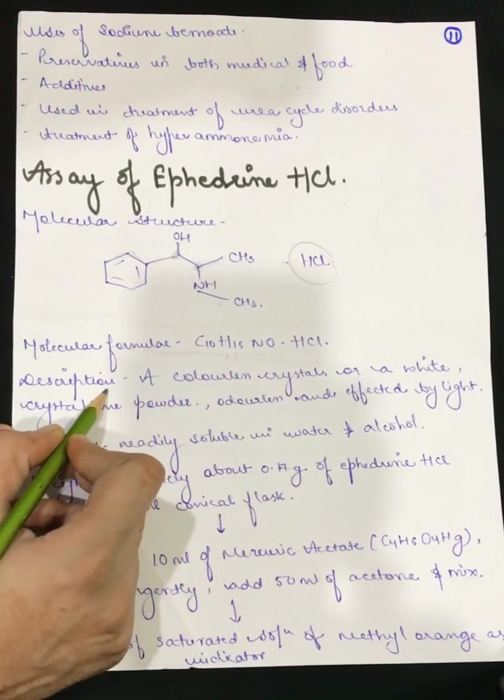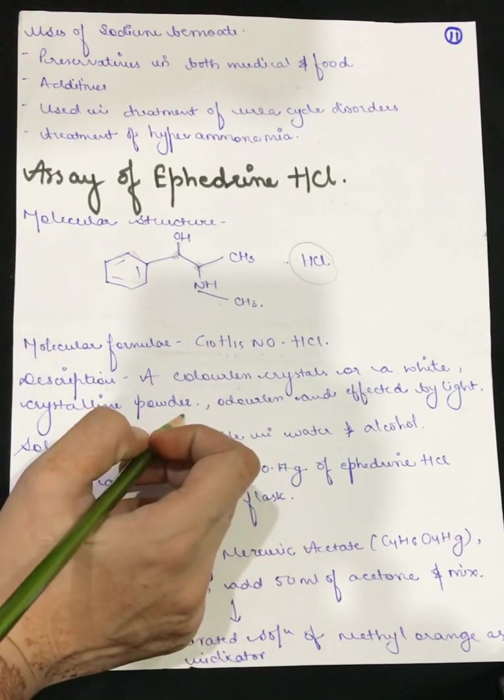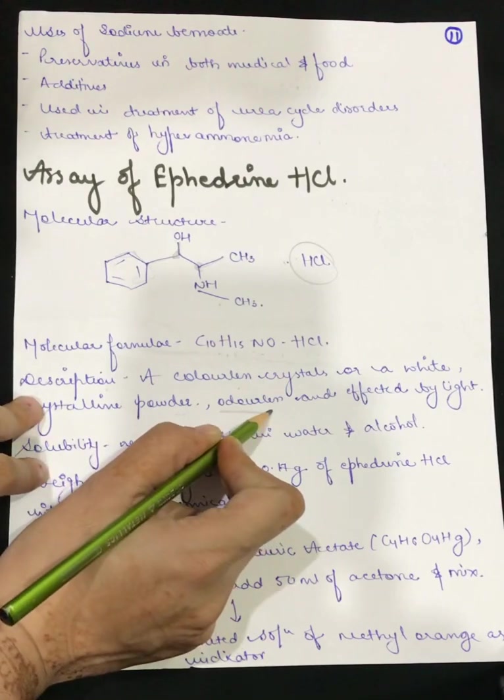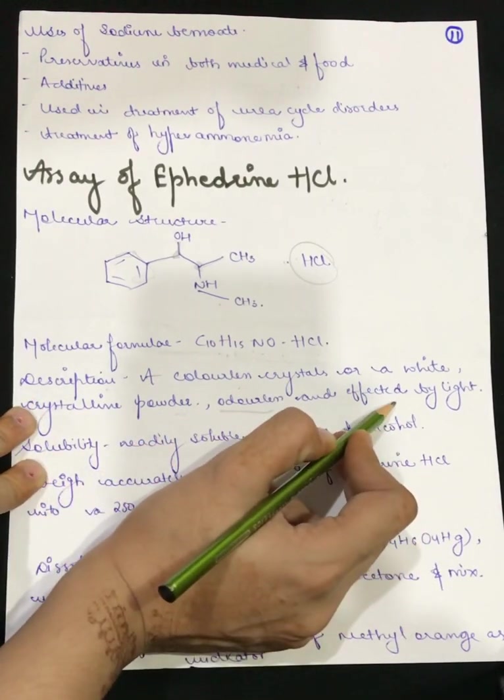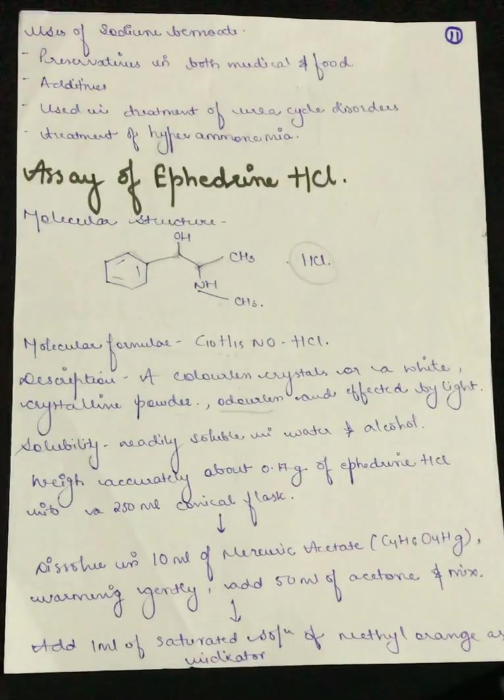In its description, it is colorless crystals or white crystalline powder. It will be odorless and affected by light, meaning light will have an effect on it. So we will store them in amber color bottles. We will store them in dark color bottles. Talking about solubility, it is readily soluble in water and alcohol.